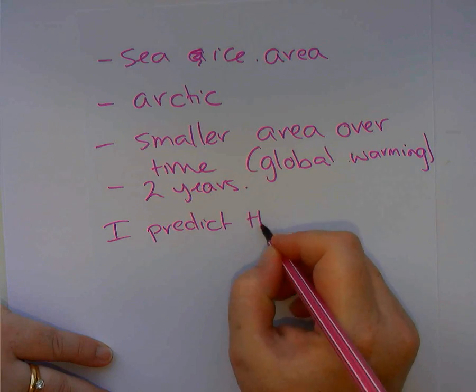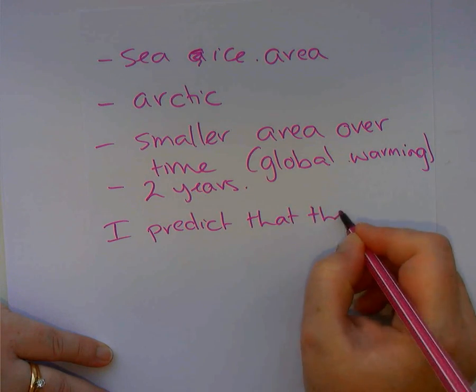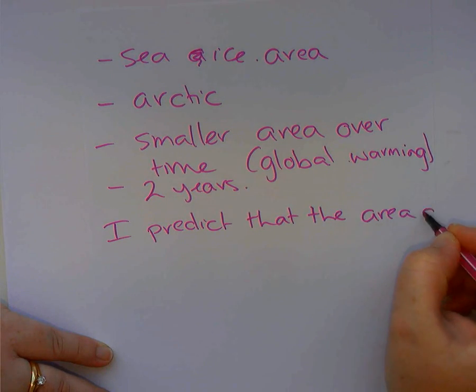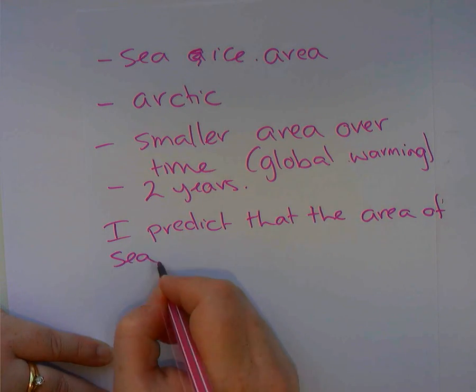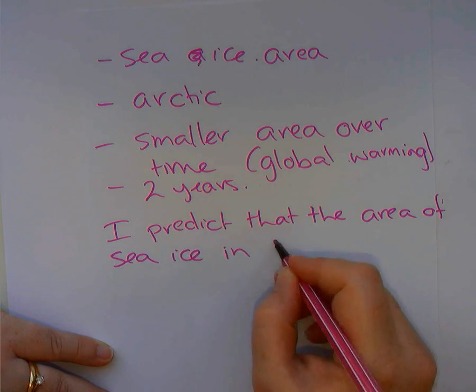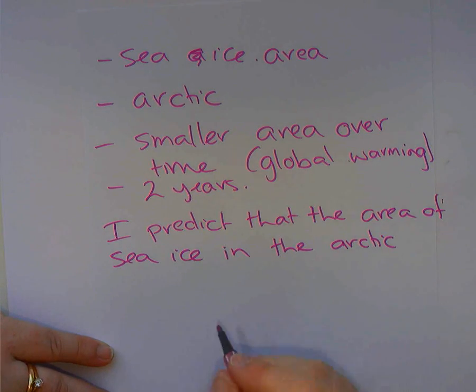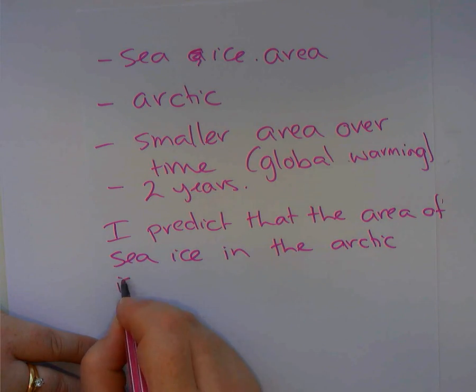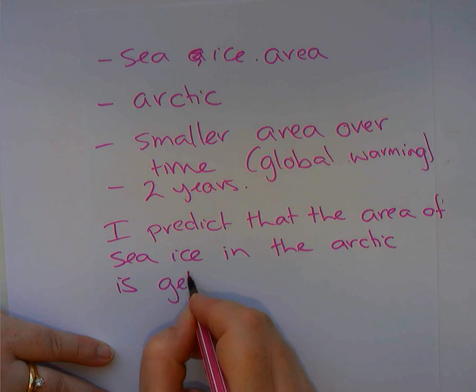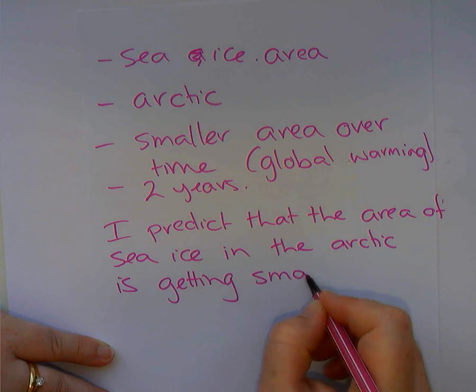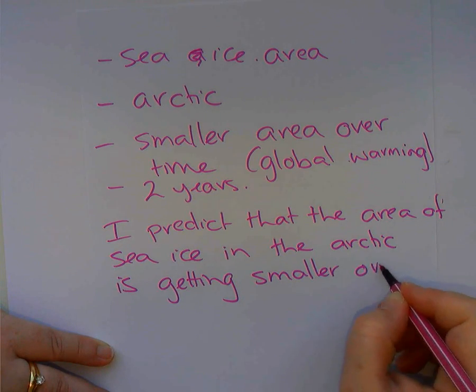So I predict that the area of sea ice in the Arctic, I'm saying all about my data set, my variables and so on. The area of sea ice in the Arctic is getting smaller over time.